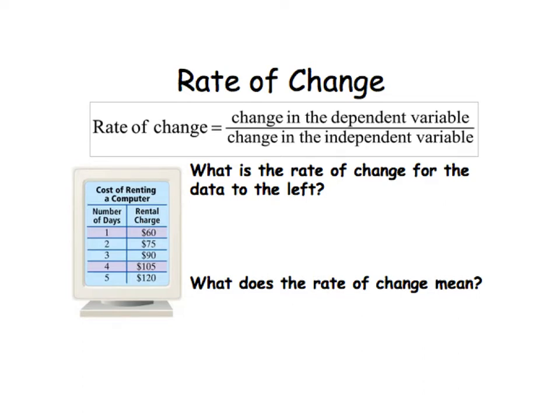So let's look at this example here in the table. Number of days and then the rental charge of the computers. So let's look at the rate of change. To do that, you're going to look at any one of these points after the first one. Let's look at this one right here and go to a previous one. And you're going to look at the change in the dependent variable. And the rental charge does indeed depend on the number of days you use it. So there's the change, 90 minus 60, divided by the change in the independent variable.